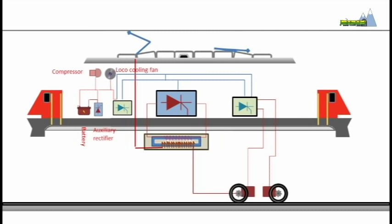Transformers and rectifiers produce a lot of heat and have to be kept cool. This important job is done by cooling fans which are powered by the auxiliary inverter.